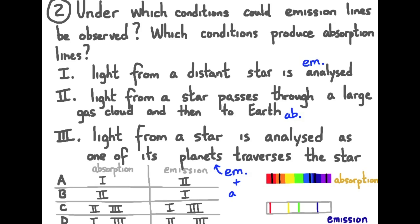Condition number three, depending upon the sensitivity of our equipment, we could get an emission and absorption spectrum here. Certainly an emission spectrum from the star is a source. As that light from the star passes through the atmosphere of the planet in front of it,